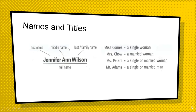Jennifer Wilson is a full name. What is your full name? When you don't know if she is married or not, you can say 'Miss Peters' — Miss. If you know that she is married, you can say 'Mrs.' Mrs. is a married woman. And how about a single woman? Miss Gomez.